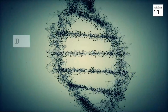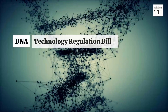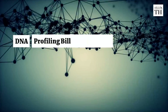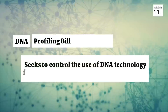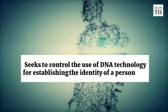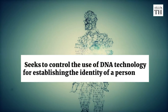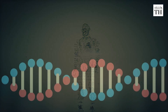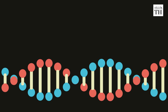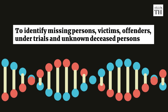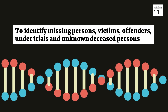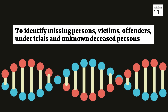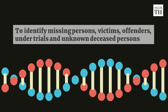The DNA Technology Regulation Bill, also known as the DNA Profiling Bill, seeks to control the use of DNA technology for establishing the identity of a person — especially to identify missing persons, victims, offenders, under-trials, and unknown deceased persons.